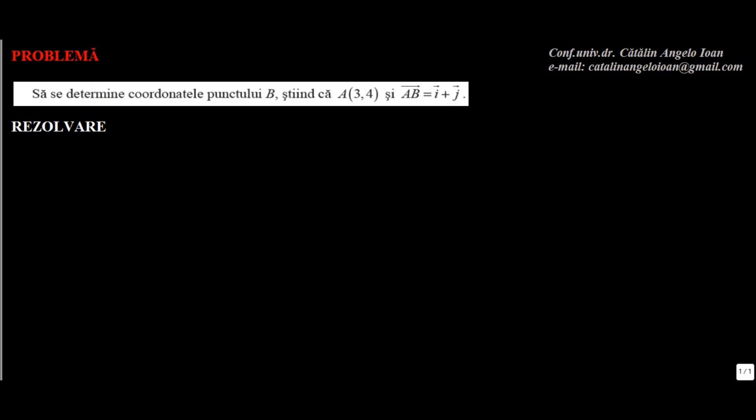Să se determine coordonatele punctului B știind că A mare este de coordonate 3 și 4, iar vectorul AB este egal cu i plus j. Ce înseamnă A mare? Că are coordonate 3 și 4, adică că vectorul OA este de forma 3i plus 4j. Să notăm coordonatele punctului B cu x și y, deci vectorul OB va avea forma generală x ori i plus y ori j.